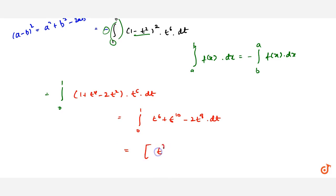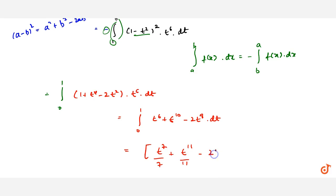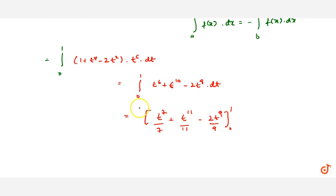Integrating each term gives: t raised to power 7 upon 7, plus t raised to power 11 upon 11, minus 2 into t raised to power 9 upon 9, with limits from 0 to 1.